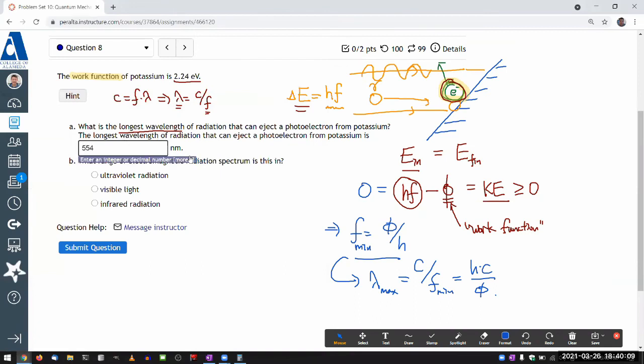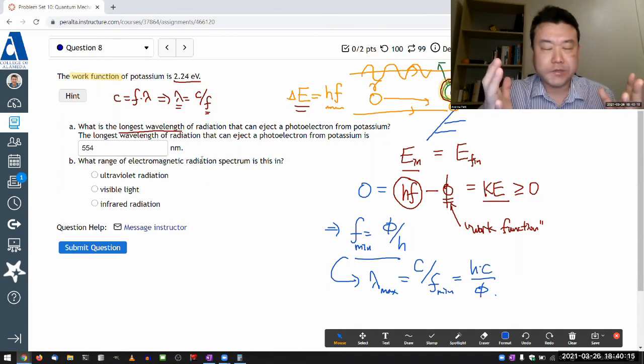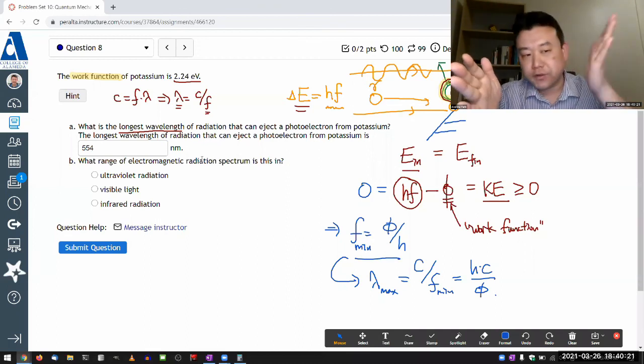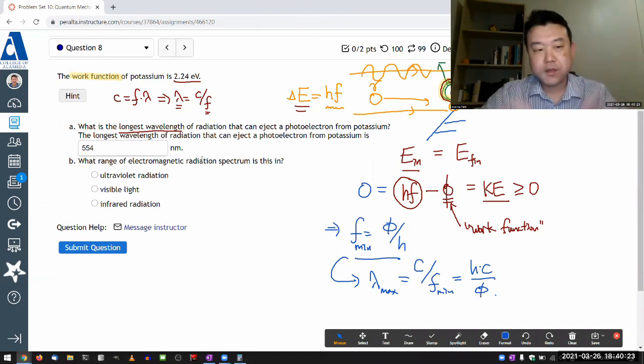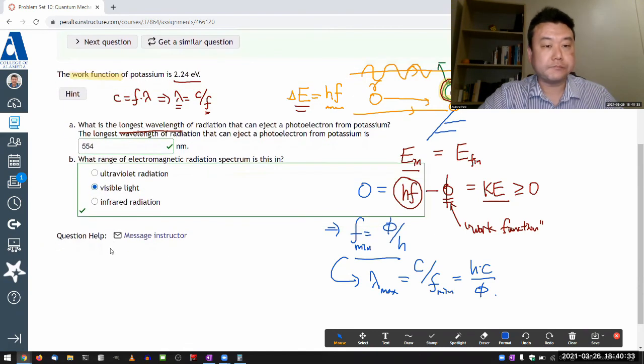So just doing the conversion in my head from 10 to minus 7 meters to nanometers, or looking at this, 554 nanometers. And I hope you have enough knowledge of physics trivia that you remember, the visible wavelength is from 400 to 700 nanometers, about that range. This is smack in the middle of it. I think this is green light. So it should be visible.